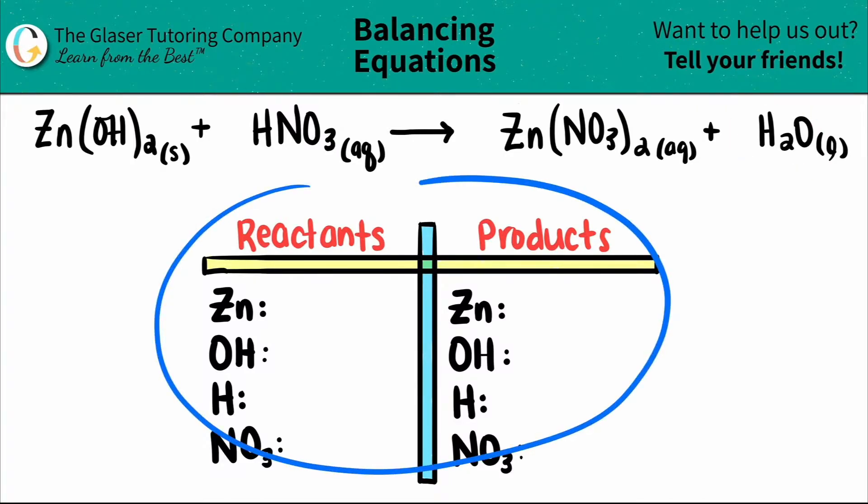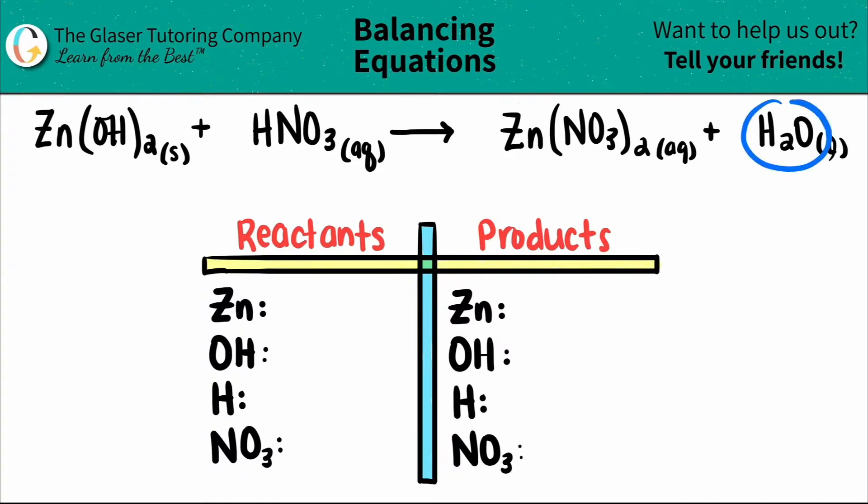I already wrote out our chart and the elements and the polyatomics that I see on both sides, but I want to give you guys a little trick. Whenever you see that you have the hydroxide ion, the polyatomic hydroxide, which is OH, and you see water on the other side, what I want you to do to make the balancing easier is get rid of the H2O and represent this as HOH. It's still H2O. There's two hydrogens and one oxygen, but by separating this out, you're going to make it easier to balance.